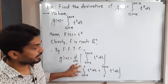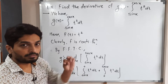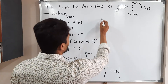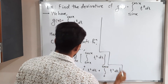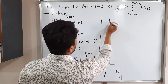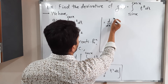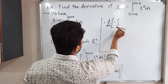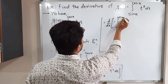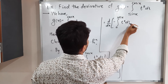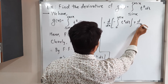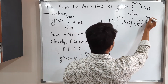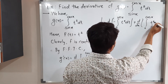So I will simply interchange the limits on the first integral, which means I need to write a minus sign outside. Therefore we can take separate derivatives: minus the derivative of the integral from zero to sine x of t squared dt, plus the derivative of the integral from zero to cos x of t squared dt.